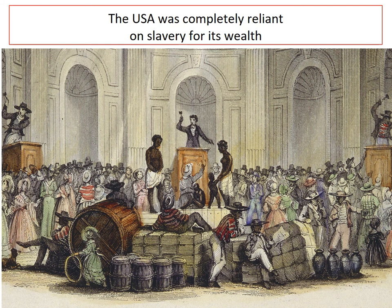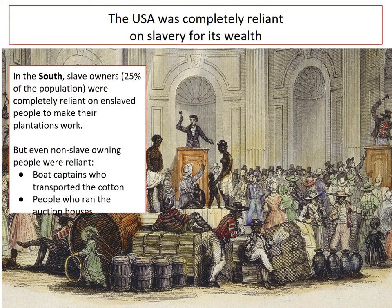The third biggest reason why opposition fails in this period is that the US was completely reliant on slavery for its wealth. Its economy was reliant upon slavery — it needed slavery in order to work. In the South, slave owners, who made up 25% of the population, were completely reliant on enslaved people to make their plantations work. But even other non-slave-owning people — the 75% of the rest of the population — were also reliant on this business.